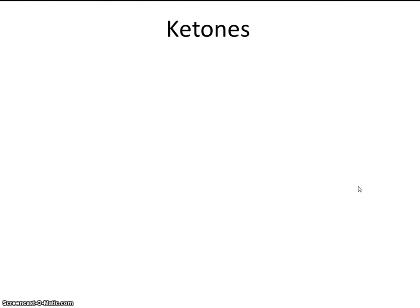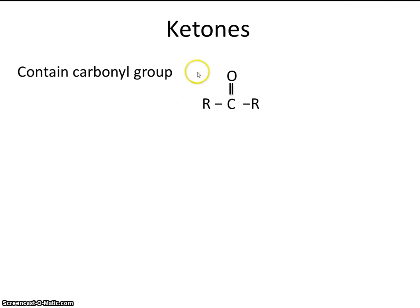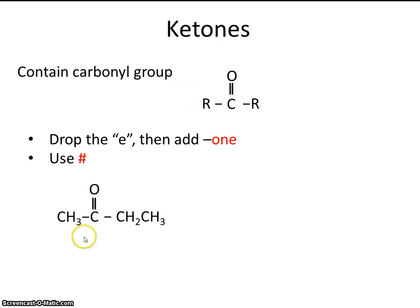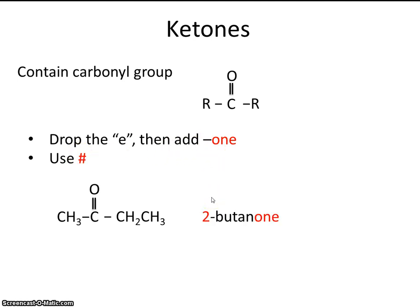Ketones contain carbonyl groups — a doubly bonded oxygen with two R groups on either side. To name them, drop the 'e' and add the suffix '-one,' and use a number to indicate where the ketone is. For example, the parent chain here has one, two, three, four carbons — that's butane. The ketone is on the second carbon, so the name is 2-butanone.